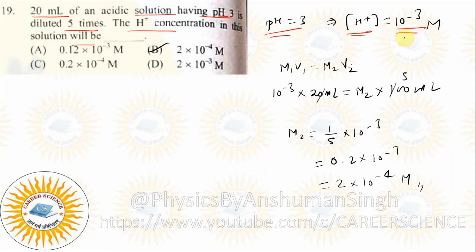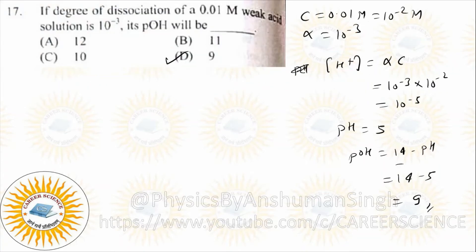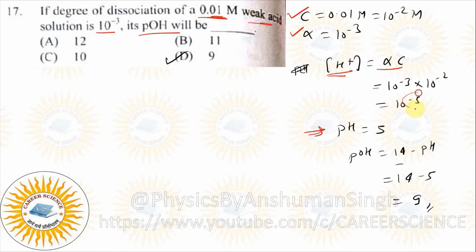This is a 10⁻³ molar solution. This is your M1 and volume given is 20 mL — this is V1. It was diluted, so the new volume is V2. Keep this dilution formula M1V1 = M2V2 in mind. Then C and alpha are given, so first find H+ ions: H+ = alpha × C. Write it directly.